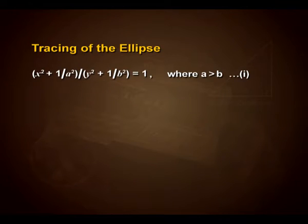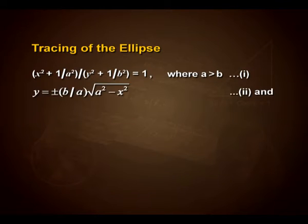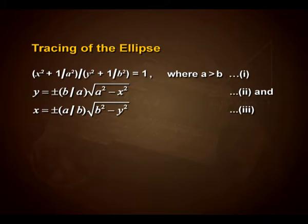Let us see the tracing of the ellipse. We have x²/a² + y²/b² = 1 where a > b — take this as equation 1. From this, y = ±(b/a)√(a² − x²) as equation 2, and x = ±(a/b)√(b² − y²) as equation 3.